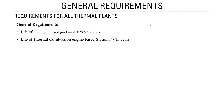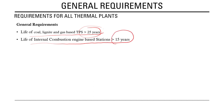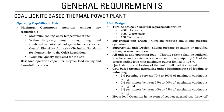For thermal generating stations, the general requirement is that the life of coal, lignite, and gas-based thermal power plants should be more than 25 years, while internal combustion engine-based stations should have a life of more than 15 years. For coal and lignite-based thermal power plants, the operating capability requires maximum continuous operation without any restriction.